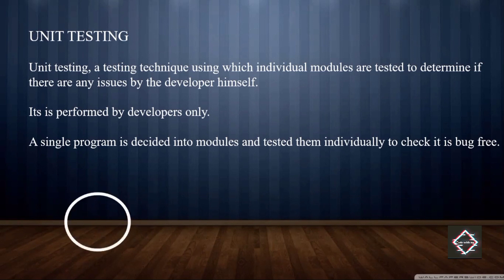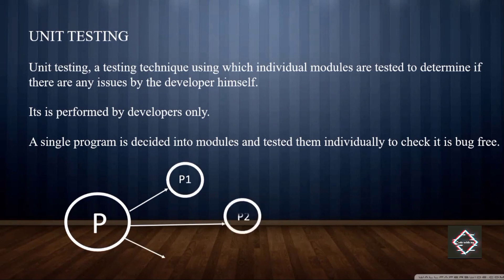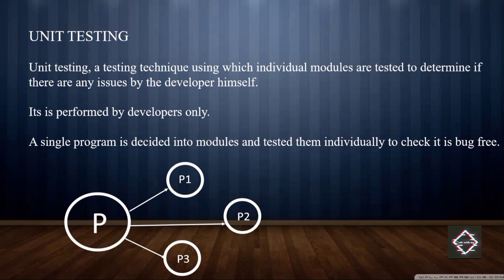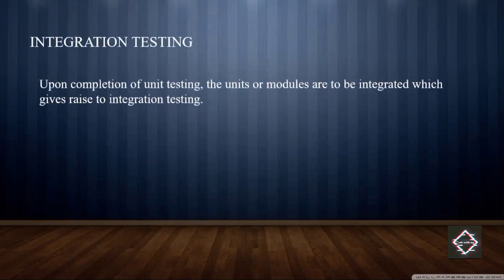To illustrate: assume there is a big program P. That program is subdivided into smaller modules P1, P2, and P3, so the combination of P1, P2, and P3 forms program P. Each of P1, P2, and P3 is tested individually — once all three are up to the mark, program P will be in good form. This is all about unit testing.